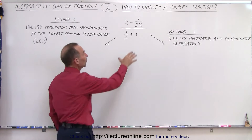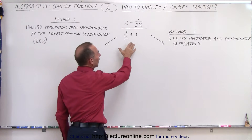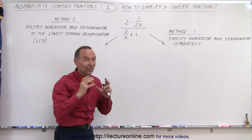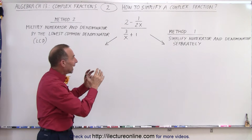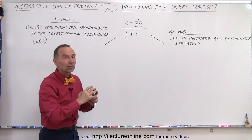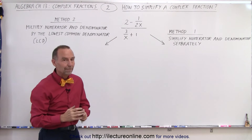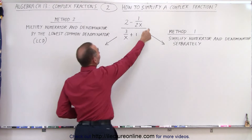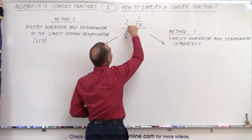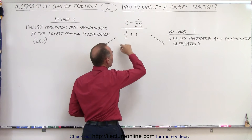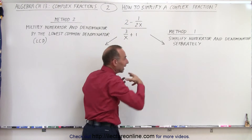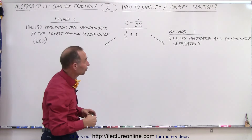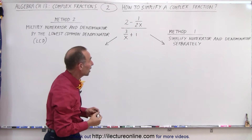So we're going to use this as an example. Method 1 says that we're going to simplify the numerator and the denominator separately. In other words, we're going to add the terms in the numerator separately, add the terms in the denominator, and then simplify whatever we have left over. So let's try that.